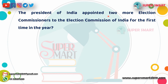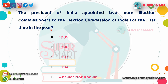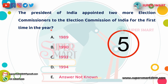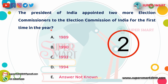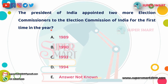The President of India appointed two more election commissioners to the election commission of India for the first time in which year? In 1989, two additional commissioners were appointed.